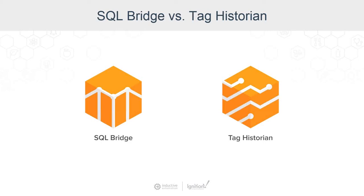The Tag Historian module was created primarily for trending of your process values. It is an easy way to log your tags into a SQL database, and then simply view a graph or summarize it in a table form to bring it back. We've done a lot of work to keep that very efficient and easy to configure, especially when using SQL databases, since a lot of our customers don't know much about databases.